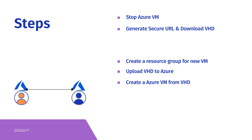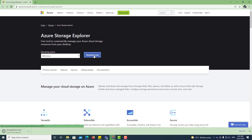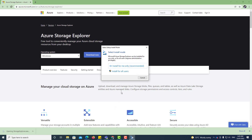Once we complete the VHD download, the next step is to upload the VHD to the other account — the second account that we want to move our virtual machine to. For this, I first need to download Azure Storage Explorer so that I can easily upload the downloaded VHD to the new account.